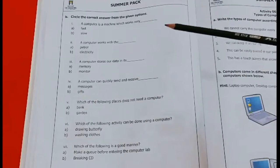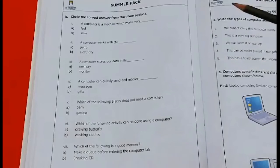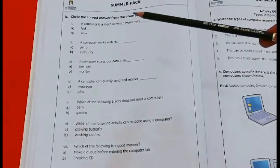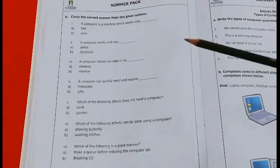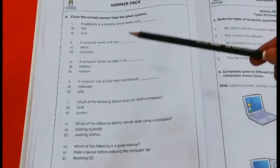Second, we have an option shown. The statement given is a computer works without dash. A option is petrol. B option is electricity.